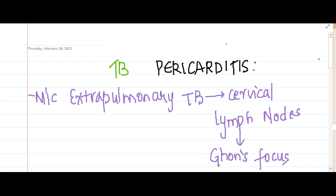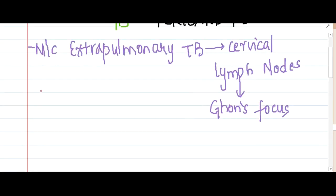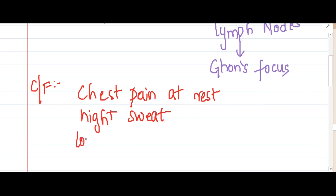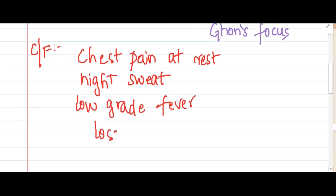So what are the clinical features of tubercular pericarditis? The patient suffers from chest pain which is seen at rest and also has night sweats because of increased fever. There will be low-grade fever, and there is loss of weight, especially a decrease of 5% of weight over 6 months is seen.